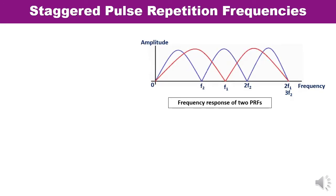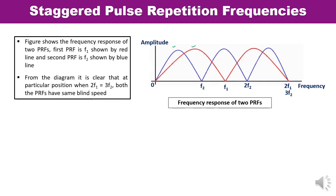Here you can see the frequency response with two PRFs shown: F1 and F2. F1 is drawn with the red line and F2 with the blue line. The x-axis represents frequency and the y-axis represents amplitude. Observing the frequency response of these two PRFs, there is a point where these two pulse repetition frequencies are equal — specifically where 2F1 equals 3F2. At that point, both PRFs have the same blind speed.